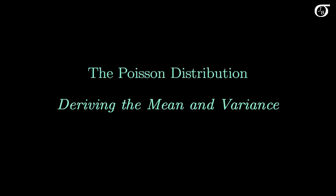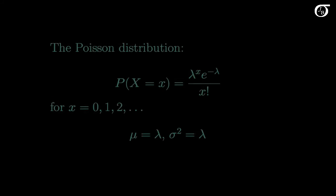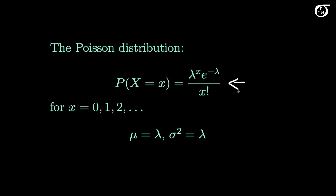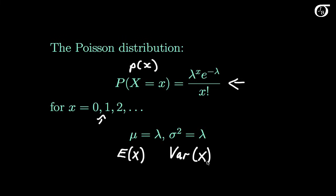Let's derive the mean and variance of the Poisson distribution. Here's the probability mass function for the Poisson distribution, which I'll sometimes write as p. A Poisson random variable can take on any non-negative whole number value. You may have been told that mu, or the mean of a Poisson random variable x, is equal to lambda, and sigma squared, or the variance, is also equal to lambda. For the Poisson distribution the mean and variance are the same, and in this video I'm going to mathematically derive both.